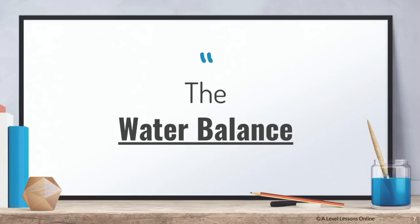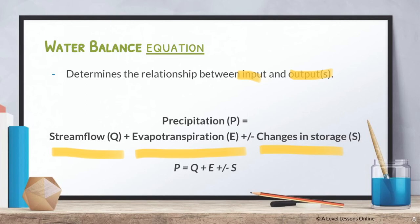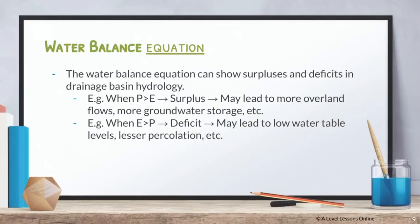Moving on to the water balance: the water balance equation is P = Q + E ± S. It essentially determines the relationship between input and output. I use this as a form of evaluation in essays to show why a higher level of precipitation leads to higher stream flow, evaporation, transpiration, and possibly higher changes in storage — it's basically using the equation to justify your argument.